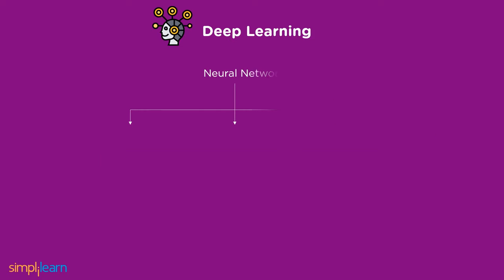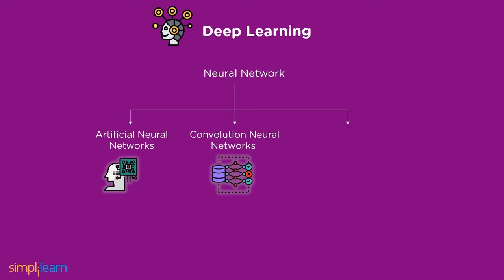Having covered the fundamentals, let's move into the different types of deep learning. Neural networks are the main component of deep learning, and they comprise three main types: artificial neural networks, or ANN; convolutional neural networks, or CNN; and recurrent neural networks, or RNN.